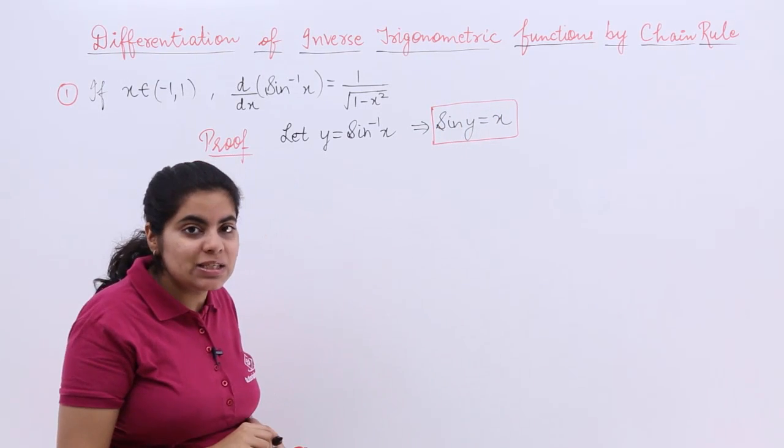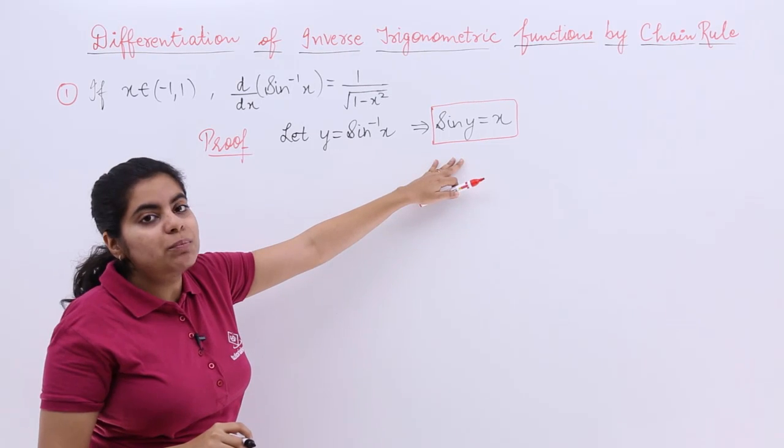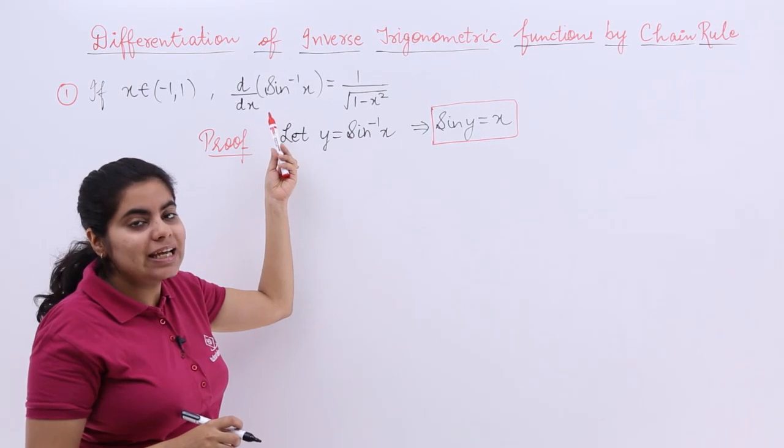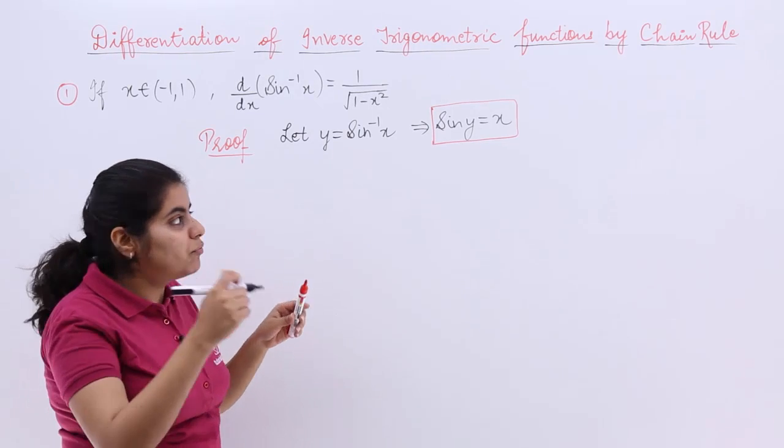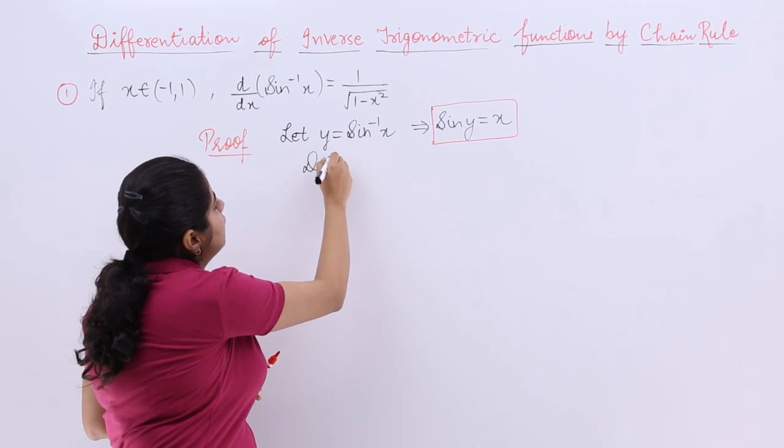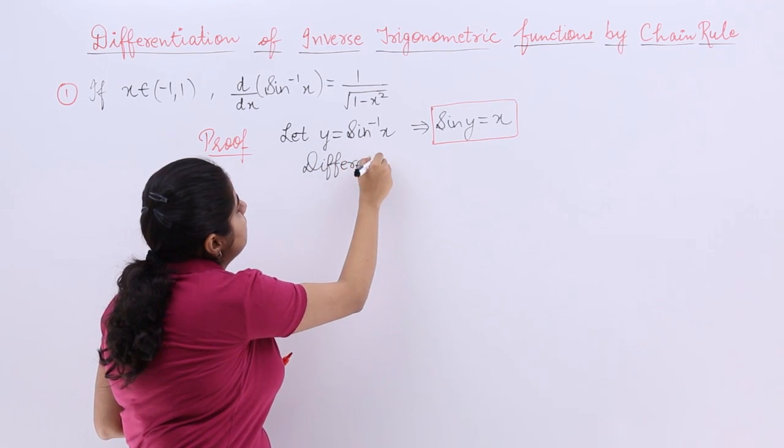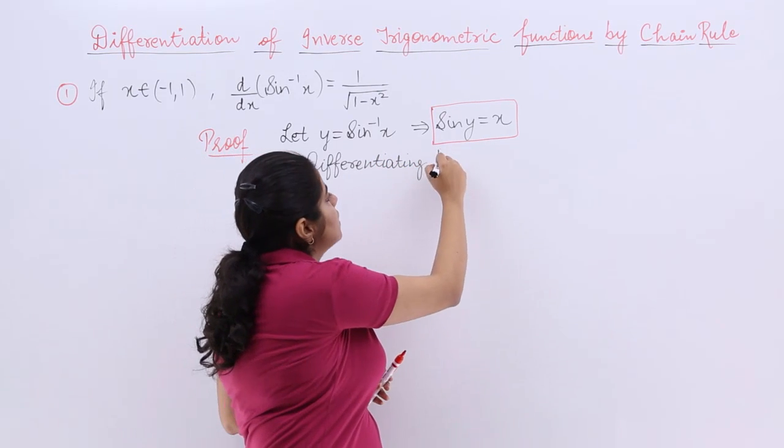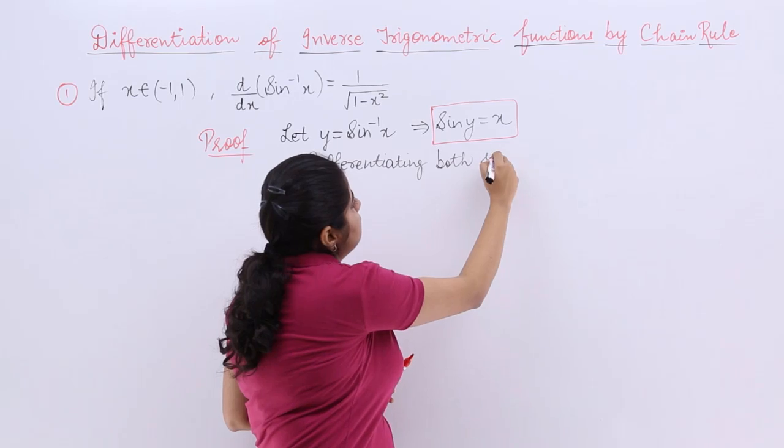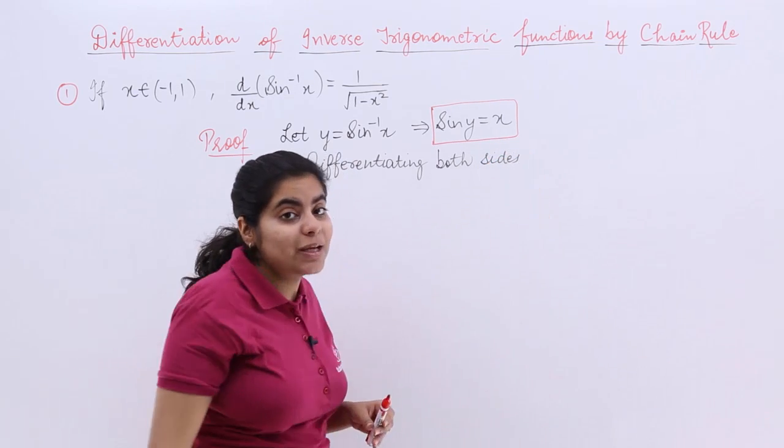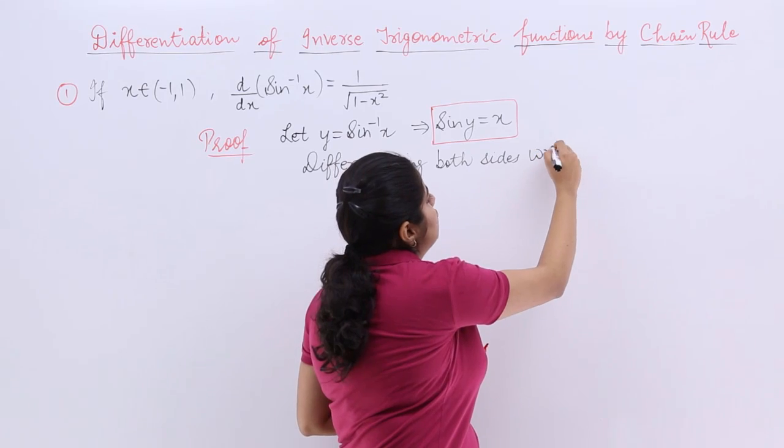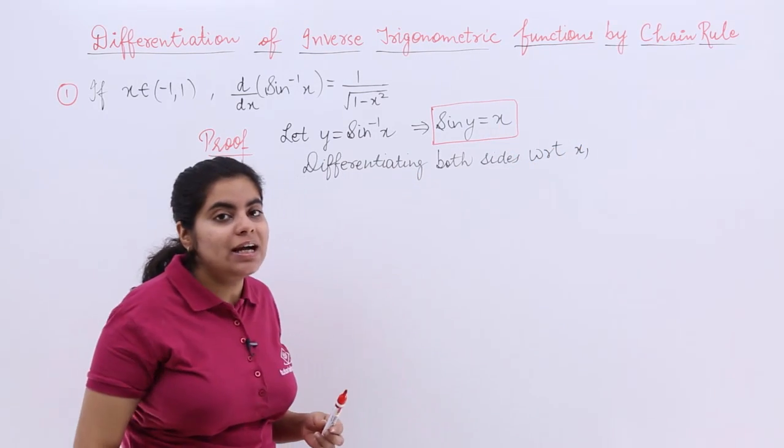Next, since we are talking about differentiation, we need something in the form of dy by dx. For that, let me write down: differentiating both sides with respect to what? Because we need dy by dx, it should be with respect to x.